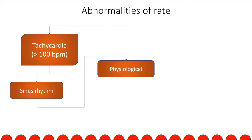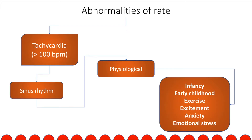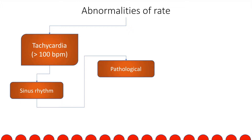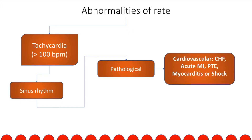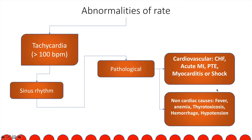The physiological causes of tachycardia in sinus rhythm are in infancy and early childhood, due to exercise, excitement, anxiety, and emotional stress. The pathological causes of tachycardia in sinus rhythm include cardiovascular causes such as congestive heart failure, acute myocardial infarction, pulmonary thromboembolism, myocarditis, and shock. Non-cardiac causes include fever, anemia, pregnancy, thyrotoxicosis, Paget's disease, beriberi, hemorrhage, and hypotension.